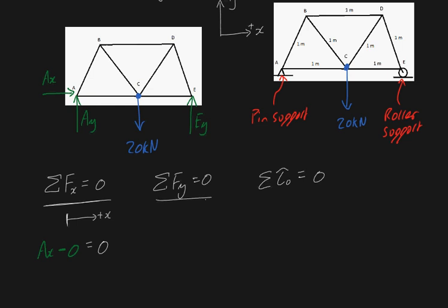Now the sum of forces in the y-direction equals zero. We've defined y as positive upwards. We have two forces in the positive y-direction: A subscript Y and E subscript Y. We subtract 20 kilonewtons because it acts in the negative y-direction. So A subscript Y plus E subscript Y minus 20 kilonewtons equals zero.